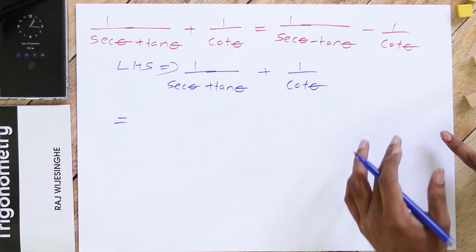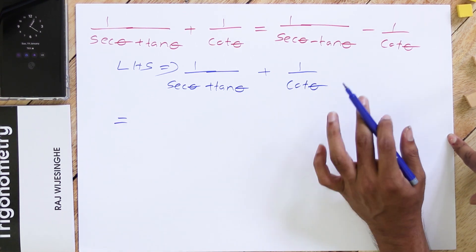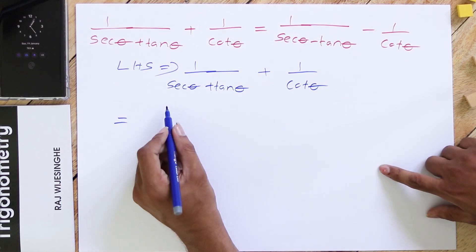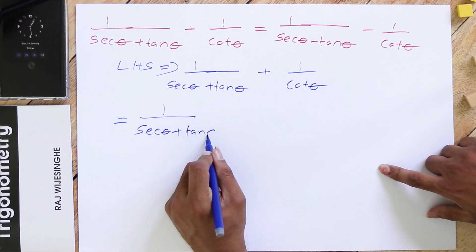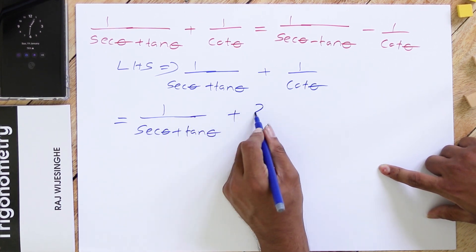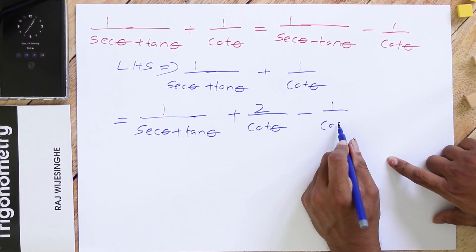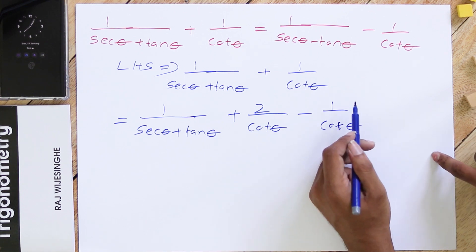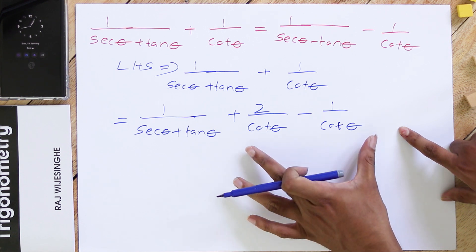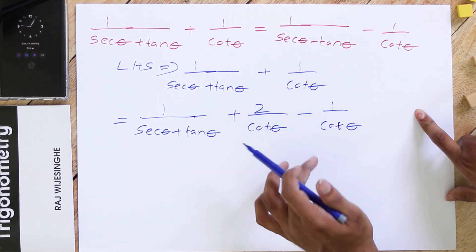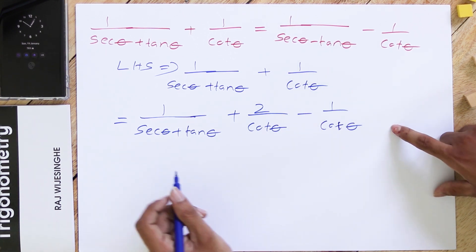In the right hand side, we see −1/cos θ. So the first step is to create a −1/cos θ term by force. We write 1/(sec θ + tan θ) + 2/cos θ − 1/cos θ. Here we have created the −1/cos θ term we need, and we haven't done anything wrong because when you simplify the two cos theta terms, 2 − 1 = 1, giving the same 1/cos θ.